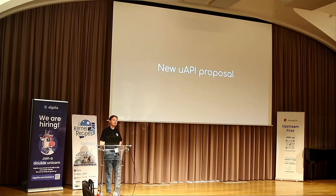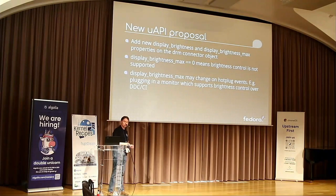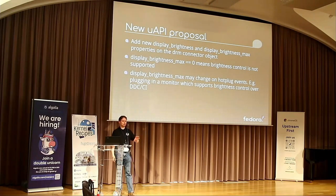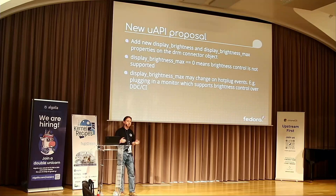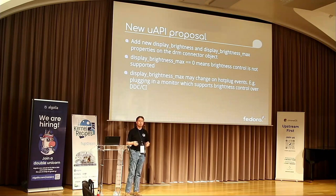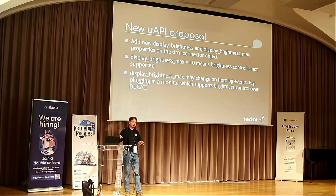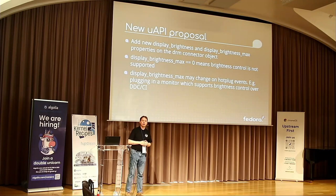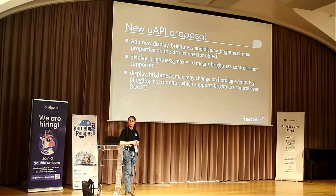There is a pretty trivial proposal for a new API: two new properties added to DRM connector objects. The DRM subsystem has the KMS part — kernel mode setting — which is about setting up the display. Each physical connector in a laptop, including internal connectors, has a software object associated with it. The proposal is to add a display_brightness property and a display_brightness_max property on those connector objects.